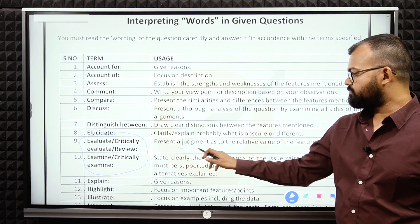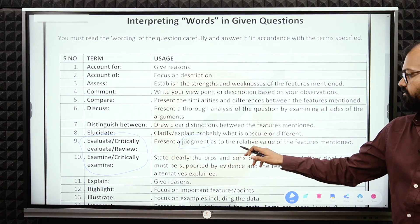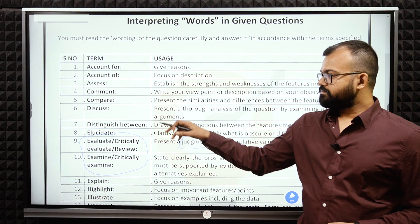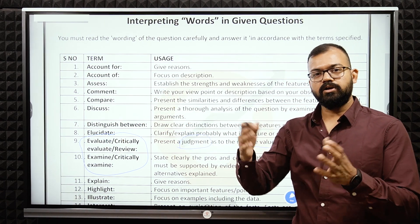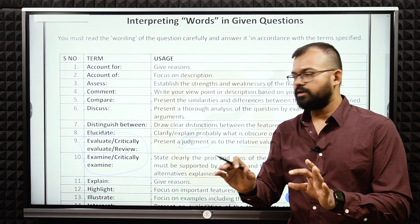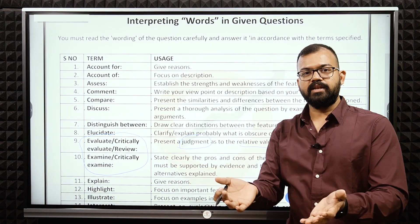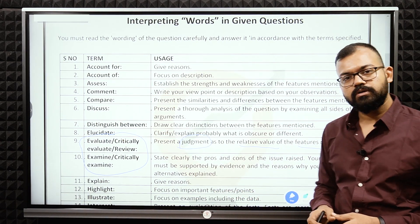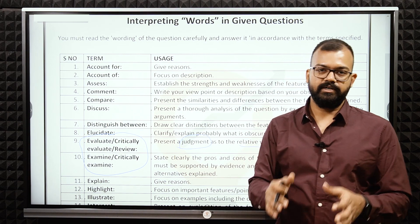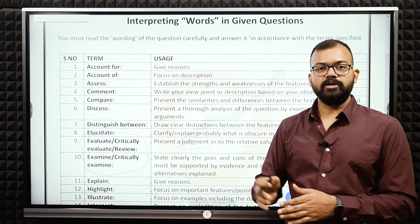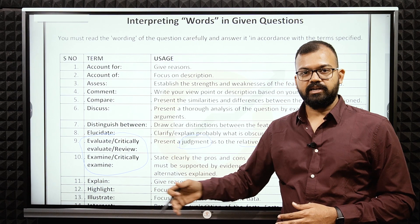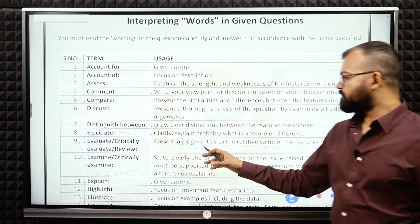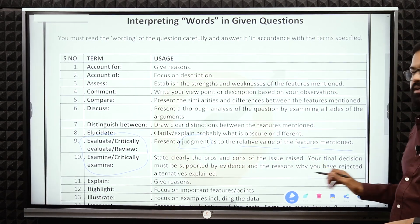What you have to do? You have to present a judgment as to the relative value of the features mentioned. Now here generally, if they are saying discuss or comment, you'll not take a stance, that will be okay. But here critically evaluate or evaluate, you are like in a position of a Supreme Court judge. What do you have to do? You have to give the final judgment decision. If you'll not do it means you are not able to take any stance.